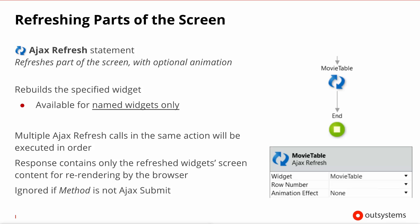As mentioned, there isn't any implicit content being sent to the user. You will need to specify which parts you want, and only those HTML contents will be refreshed on the page. Incidentally, if the screen action you're executing hasn't been called via an Ajax submit but rather via a normal submit, these statements will just be ignored.